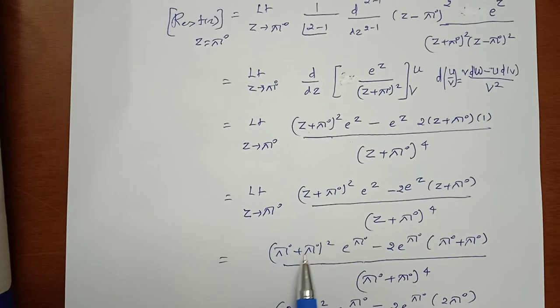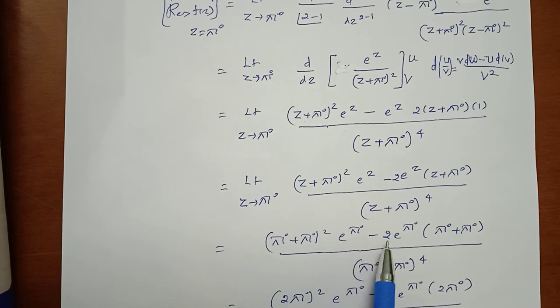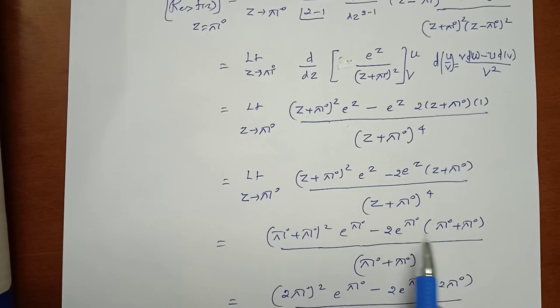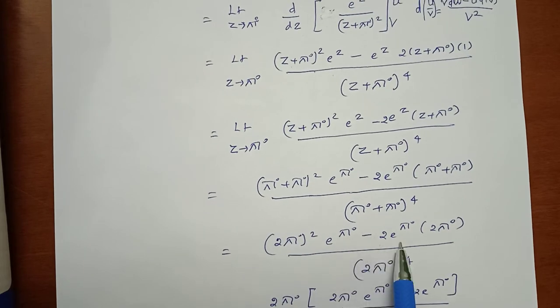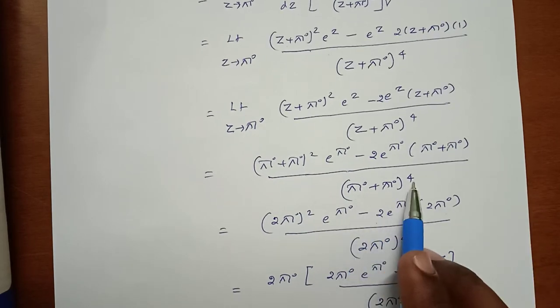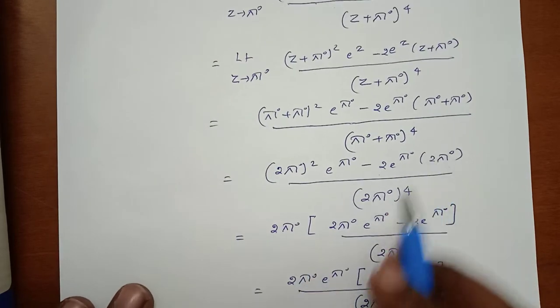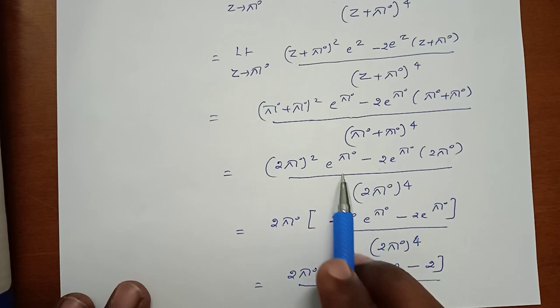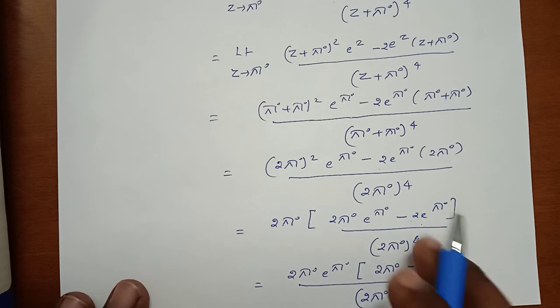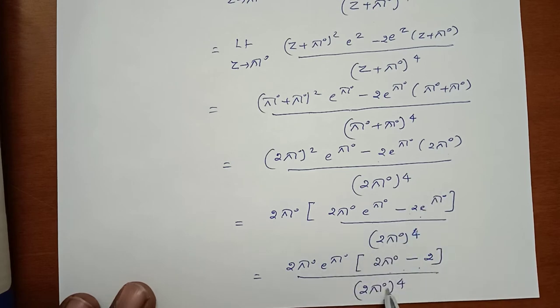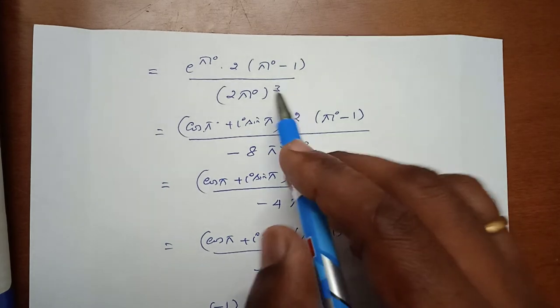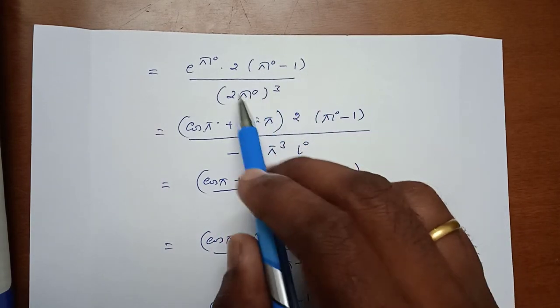Substituting z = πi: the numerator becomes (2πi)² · e^(πi) − 2e^(πi) · 2πi, and the denominator is (2πi)⁴. Factoring out 2πi · e^(πi), we get 2πi · e^(πi) · (2πi − 2) in the numerator. Simplifying with common factor 2: e^(πi) · 2(πi − 1) / (2πi)³, which reduces to e^(πi)(πi − 1) / (4π³i) after cubing 2πi = −8π³i.